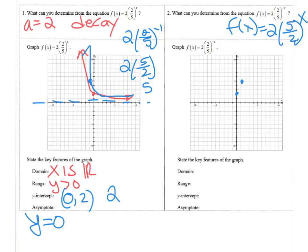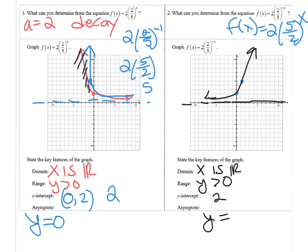All right. We'll ignore that red part. Sorry for my mistake. It's now connecting my points. There's my growth. I'm not going to forget my horizontal asymptote this time. x is all reals. y is greater than 0. My y intercept is 2. My asymptote is y equals 0.